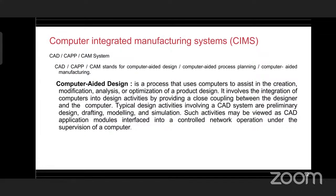Surface modeling and solid modeling are also used, along with parametric modeling methods in the geometric modeling area. Engineering analysis completes the analysis and evaluation of the product design; a number of computer-based techniques are used to calculate the product's operational, functional, and manufacturing parameters. The last function of the CAD system is automated drafting, which includes 2D and 3D product design drafting and converting a 3D entity model into a 2D representation.